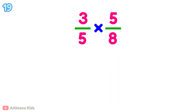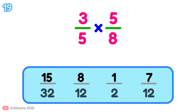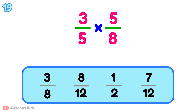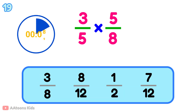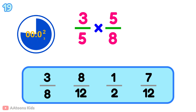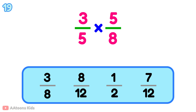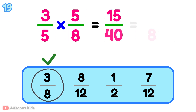What is 3 over 5 multiplied by 5 over 8? 3 over 8.